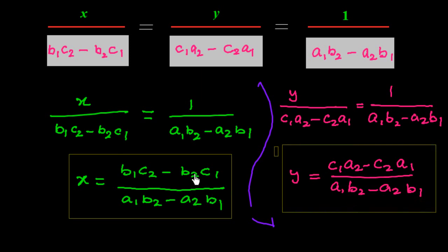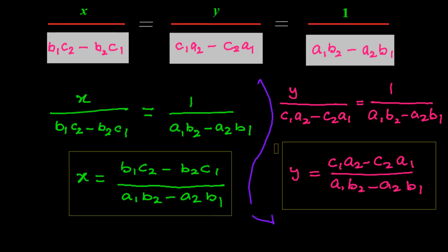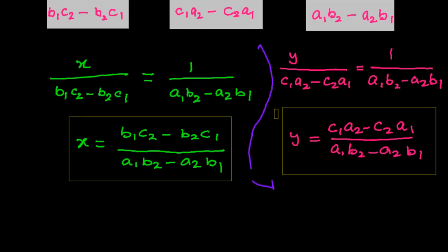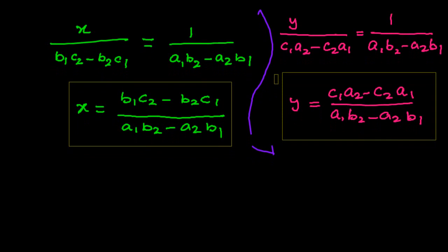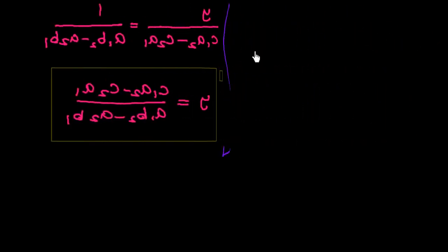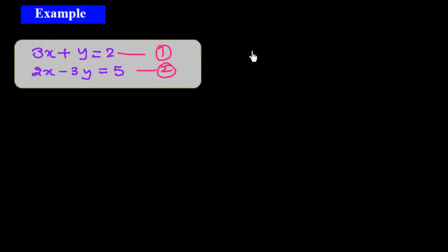These are the formulas to find out the solution, and this is the concept of the cross multiplication method. Now let me show you one example to see how we get the solution. The example is: 3x plus y is equal to 2, and 2x minus 3y is equal to 5.